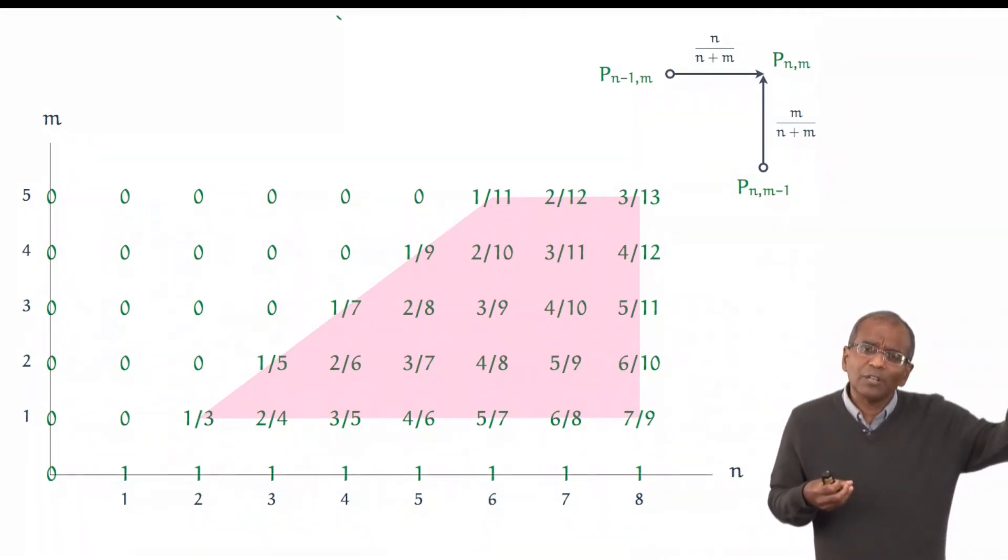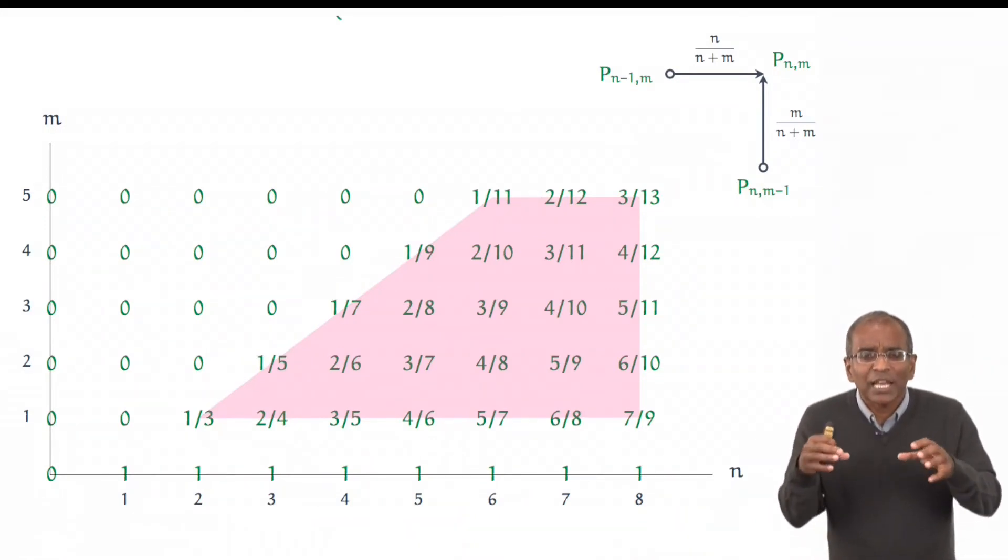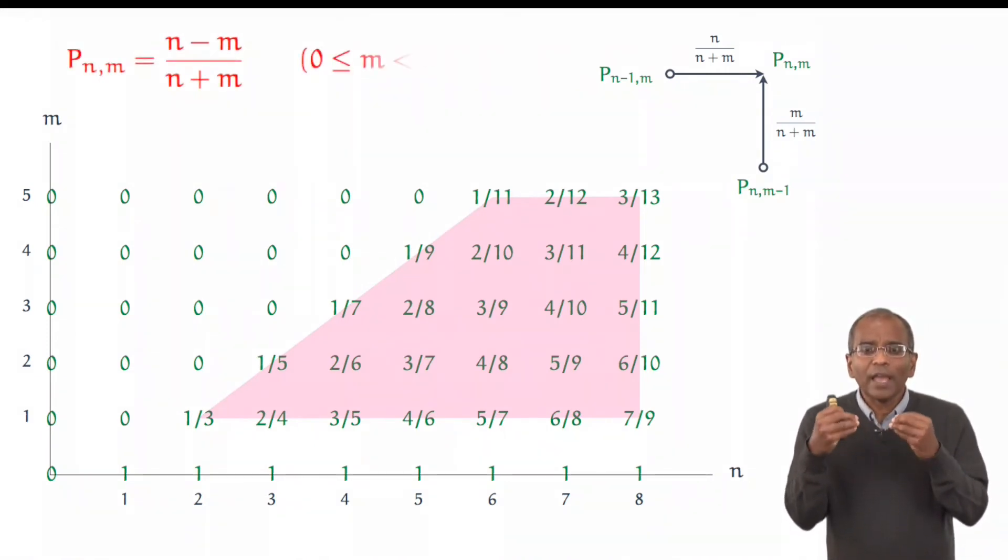What about 51, 49? Well, we're going to have to go far enough along this wedge till we get to 51, 49. But it would be nice, wouldn't it, if we had an explicit formula for what P of n, m is. Now, if you look at this and stare at it long enough, you will see a pattern emerging. And the pattern gives you a conjecture for what the answer might be. P of n, m appears to take a particularly simple and beguiling form: the ratio of n minus m to n plus m when n is bigger than m.